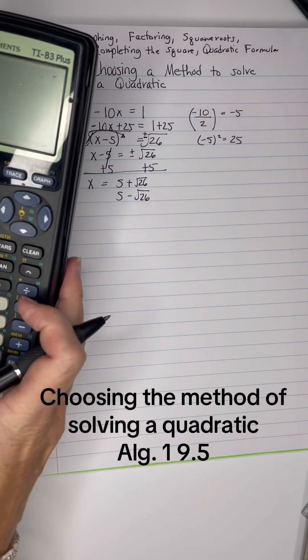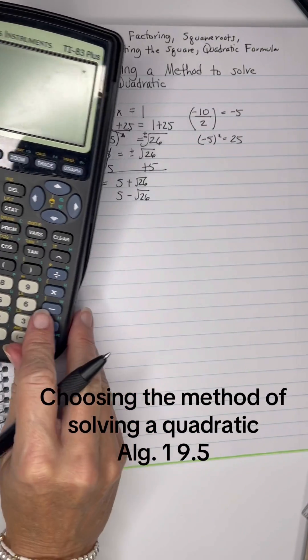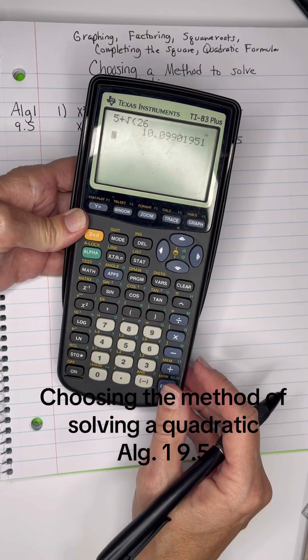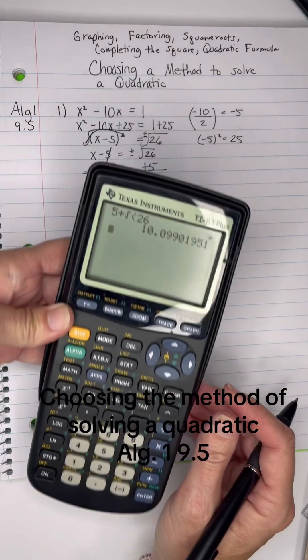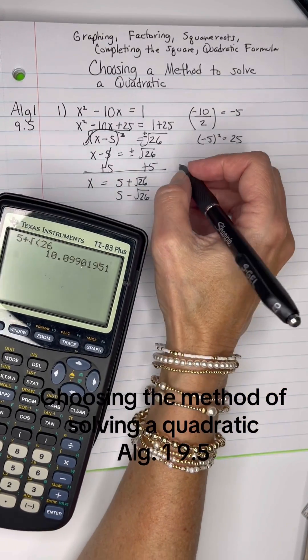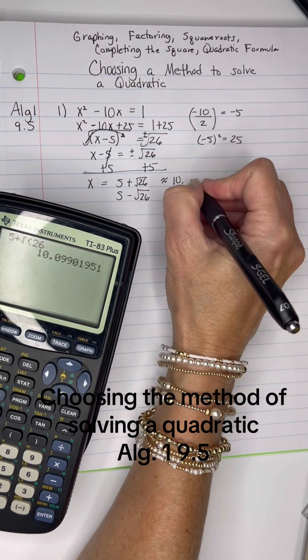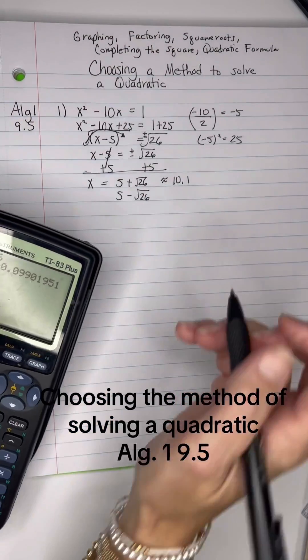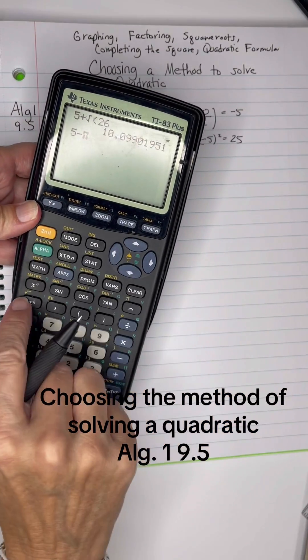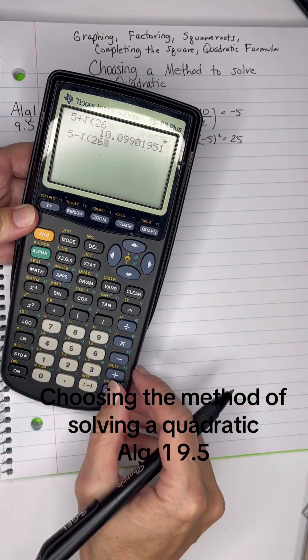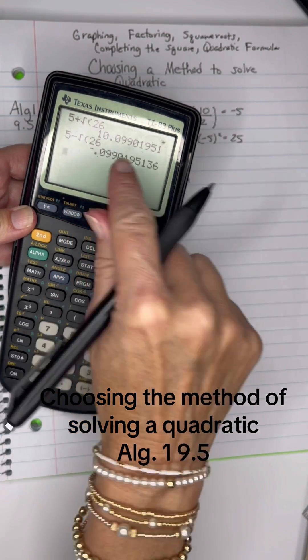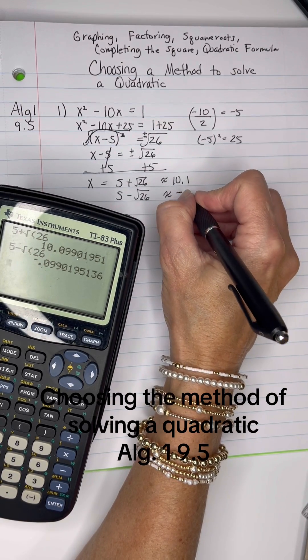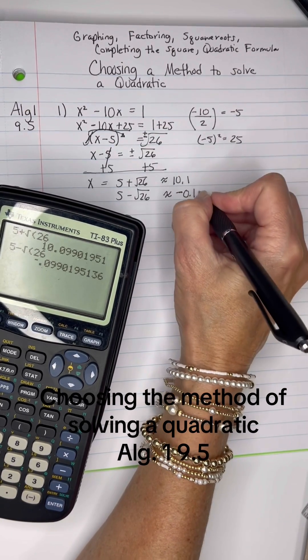So we're going to need the calculator for that. 5 + √26 is 10.099. So that one will be about 10.1 – that 9 will make that 9 go up to a 10. And then 5 - √26, which would be about -0.99. So that would be about -0.1.